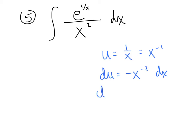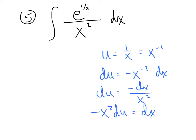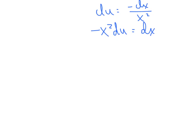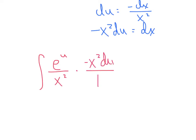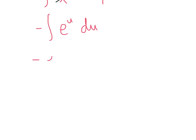The derivative of x to the negative 1 is negative dx over x squared. Solving for dx: dx equals negative x squared du, so x squared is now in the numerator with du. Making substitutions: e to the u over x squared times negative x squared du. The x squared cancels completely. Rewriting: negative integral of e to the u du, whose antiderivative is negative e to the u plus c.